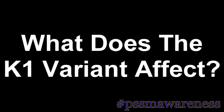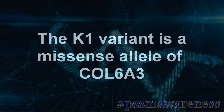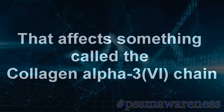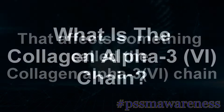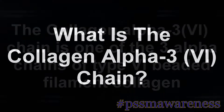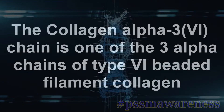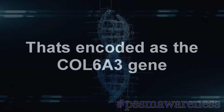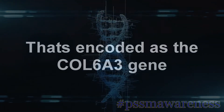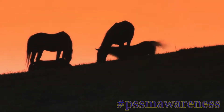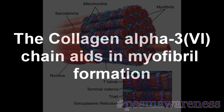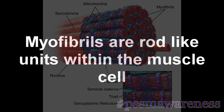What does the K1 variant affect? The K1 variant is a missense allele of Col6A3 that affects something called the collagen alpha 3 chain. The collagen alpha 3 chain is one of the three alpha chains of type VI beaded filament collagen, encoded as the Col6A3 gene. Collagens are the most abundant protein in mammals and are the main structural components of connective tissue. The collagen alpha 3 chain aids in myofibril formation. Myofibrils are rod-like units within the muscle cell.